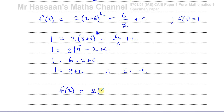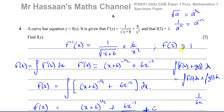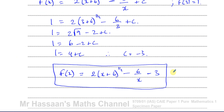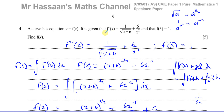So the complete answer is: f(x) equals 2 times (x+6) to the power of a half, minus 6 over x, minus 3. We used integration and the given condition f(3) = 1 to solve this problem. Other questions related to this topic of integration can be found in the playlist in this section, and other questions from this specimen paper of the 9709 P1 Pure Mathematics can be found in the playlist over here. You can subscribe to my channel by clicking this link. Thank you for watching and see you soon.